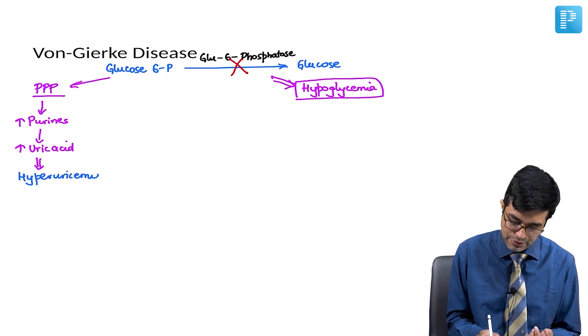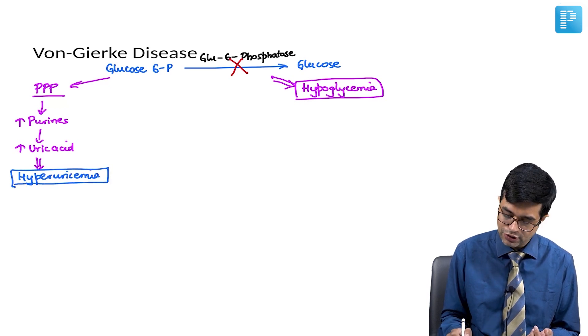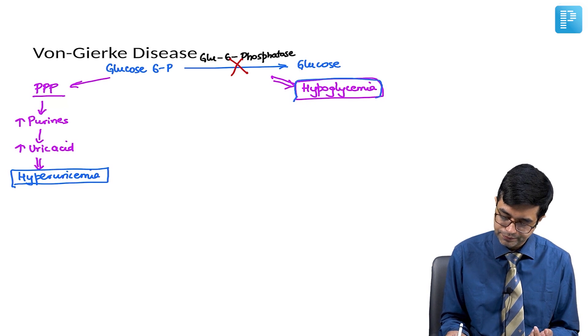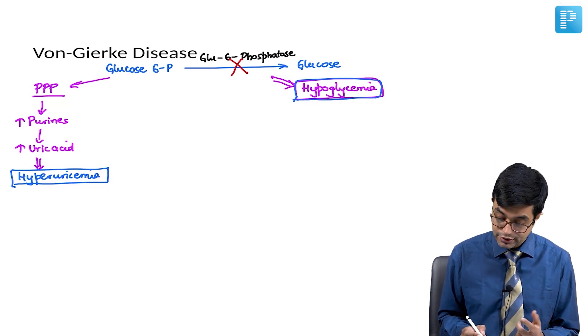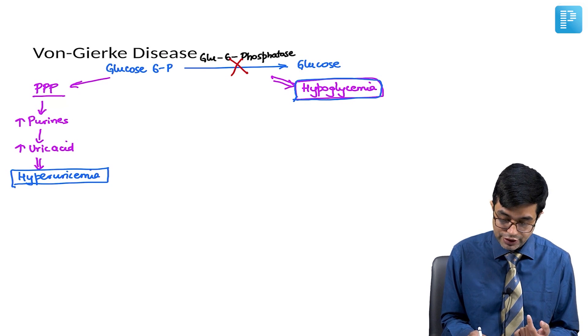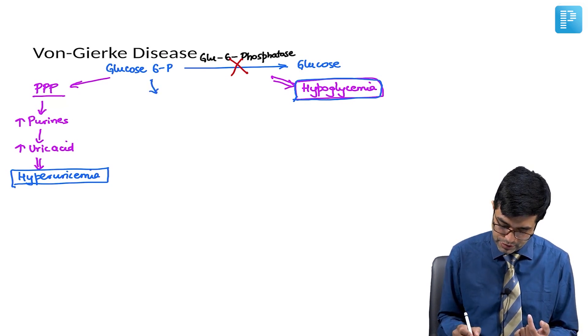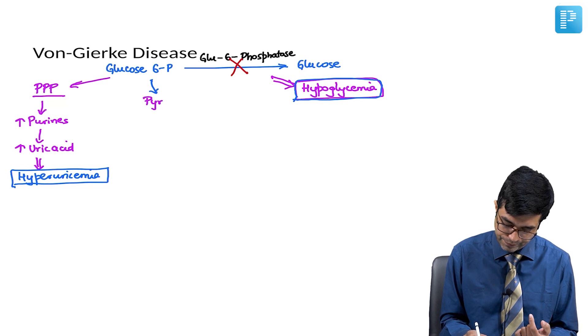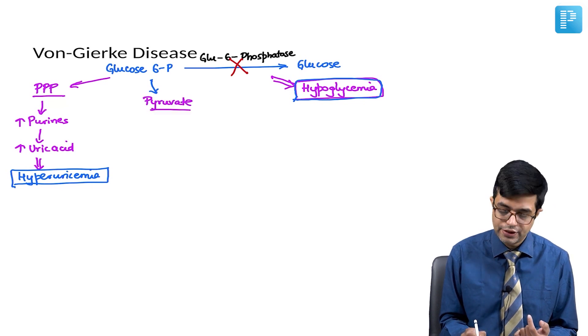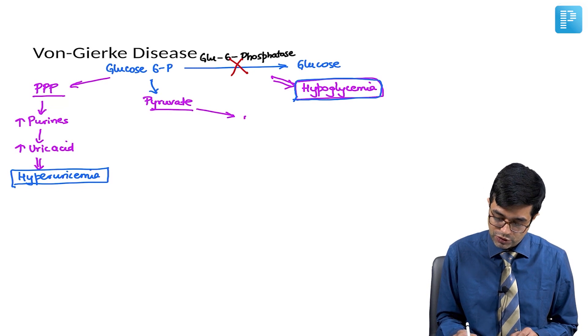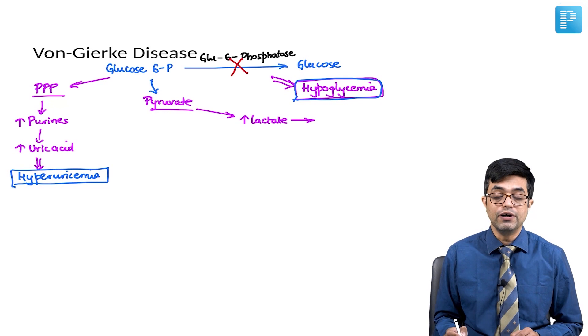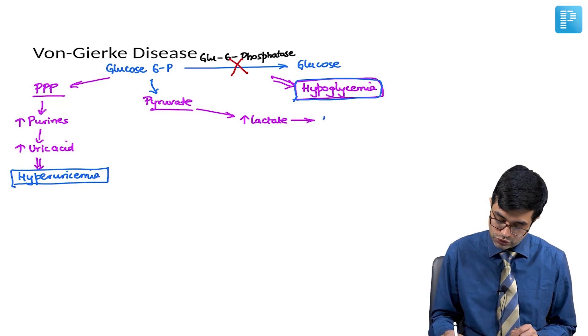This will produce hyperuricemia in the patient. So, you will have hyperuricemia and gout-like changes along with hypoglycemia. Third thing, this glucose 6-phosphate will also get converted into pyruvate. This pyruvate in turn will form more amount of lactate and this lactate will cause lactic acidosis in the patient. So, you will have features of lactic acidosis happening.